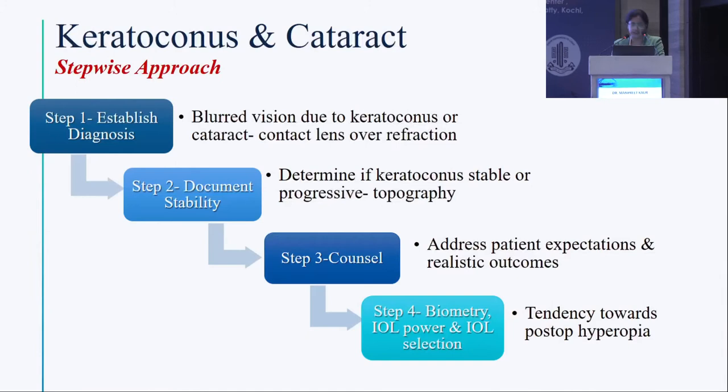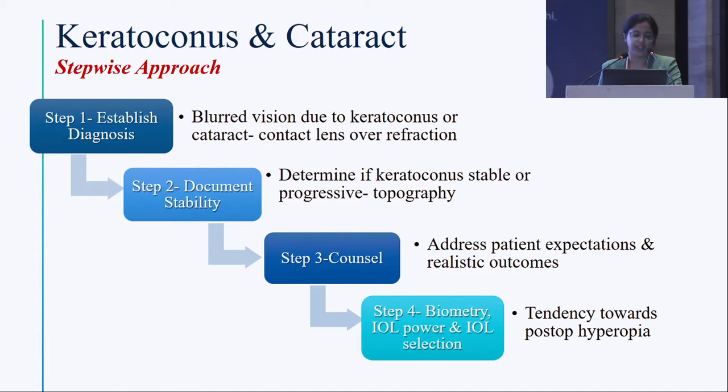There is a stepwise approach when you see a patient of keratoconus with cataract. First, establish the diagnosis — is the blurred vision due to keratoconus or cataract? Do a contact lens over-refraction. Do not be hasty to treat a mild cataract that can be corrected with contact lens or spectacles alone.